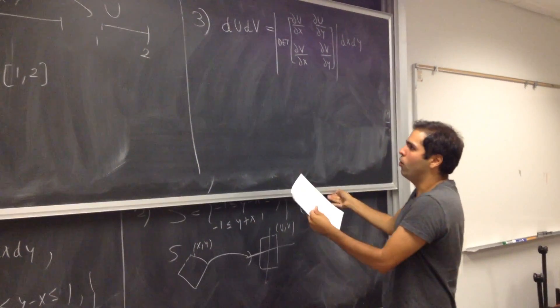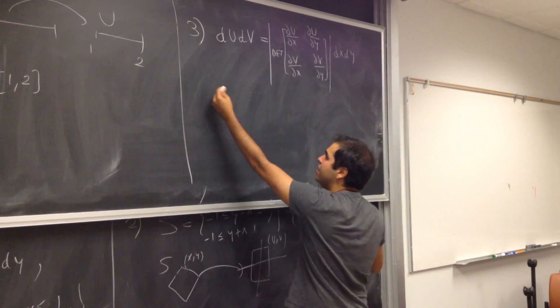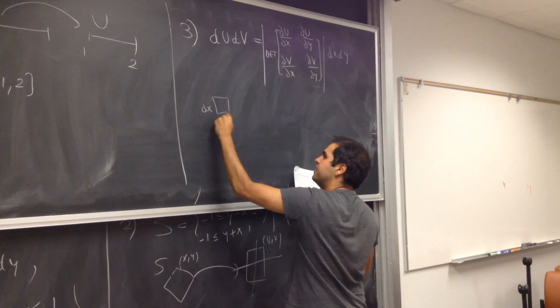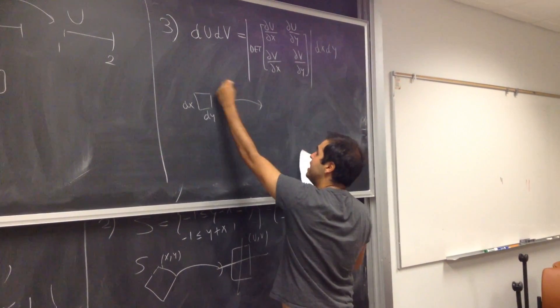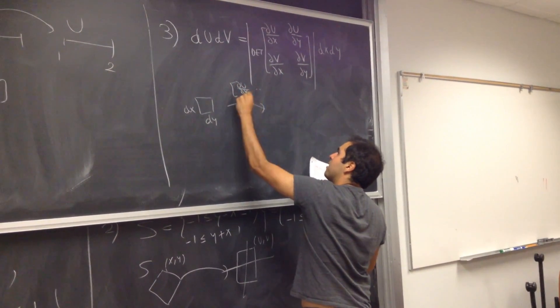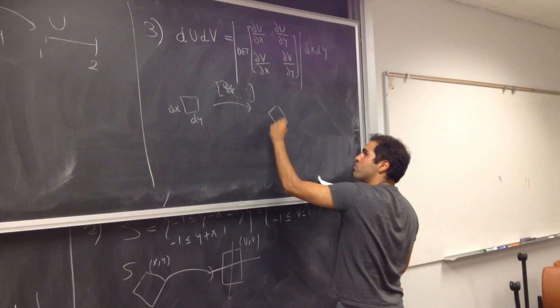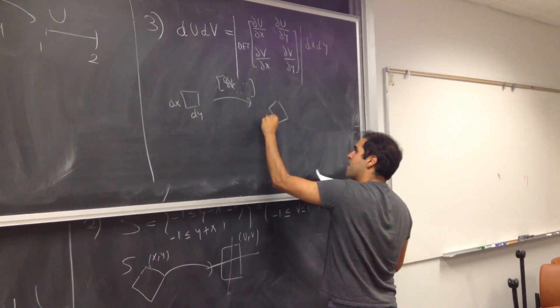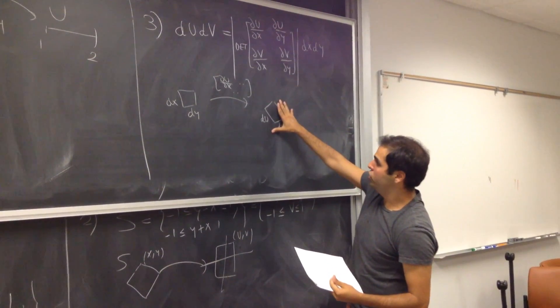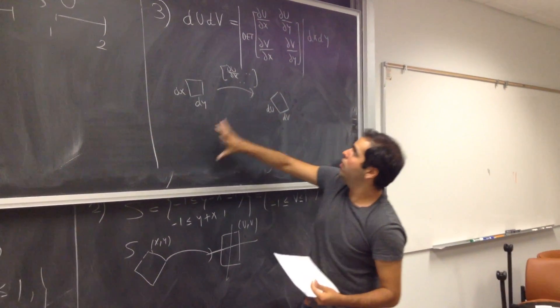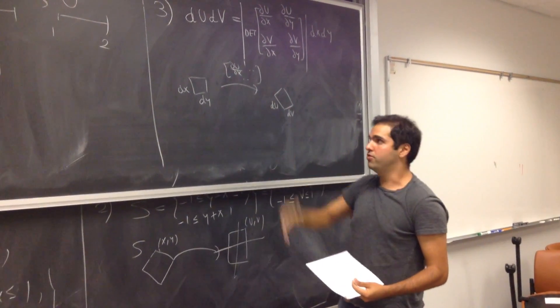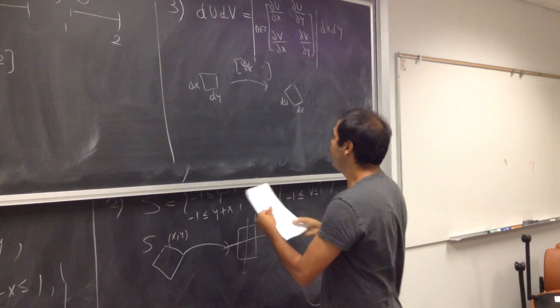And again, relating to my previous video, it has to do because if you take a little square of area dx dy, if you apply this matrix to it, du over dx, blah, blah, blah, it changes it to some other weird object with area du dv. And the point is, the new volume, du dv, becomes the old volume times the determinant of this matrix, absolute value. Okay. And now, in this case, let's figure out what this is.